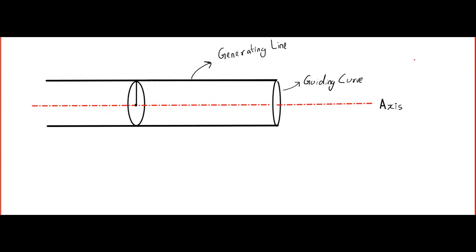You have to imagine that a cylinder is made by a guiding curve. If you want to imagine a guiding curve, you can imagine a circle or an ellipse or a parabola or any conic section. The second thing you need is an axis — a line passing through its center of gravity. Now just imagine what will happen if you draw lines parallel to the axis.